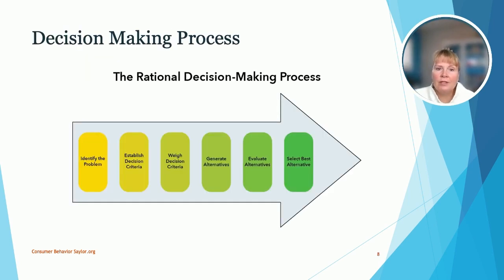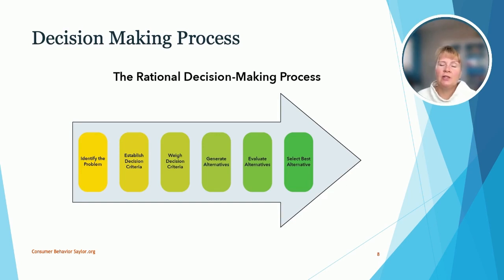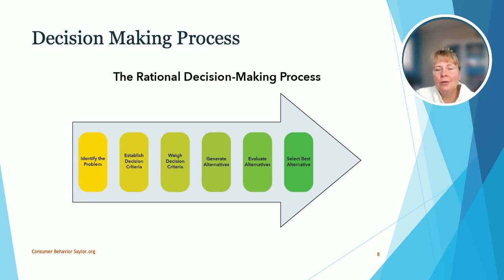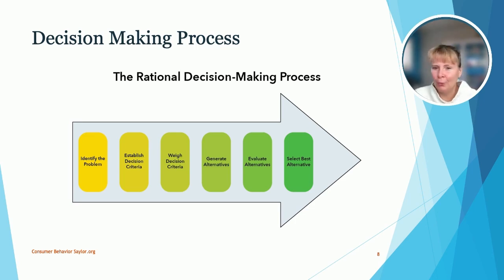This shows the rational decision making process. First you have to identify the problem. This applies to most purchases, though not all. If someone sees a product they feel like they have to have, they may skip some of these stages. For example, if you see something on TikTok or YouTube and think 'I need that,' you may not have first identified a problem — you just know you want it.